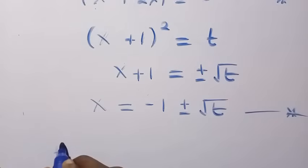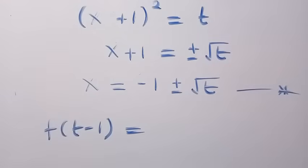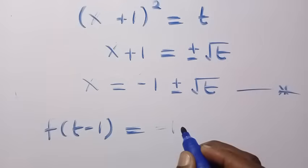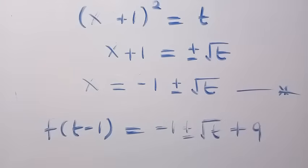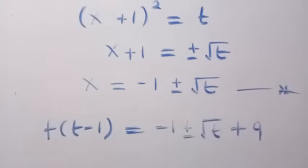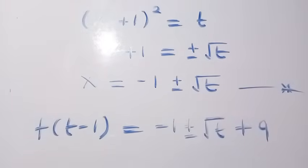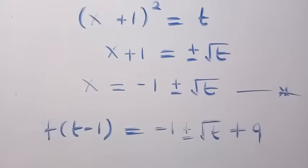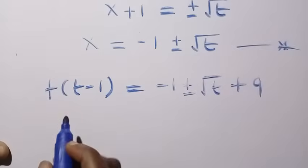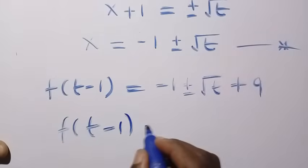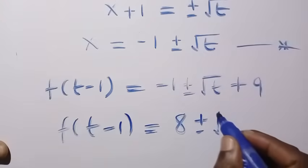After substituting, we have f of t minus 1 equals x plus 9, where x is minus 1 plus or minus the square root of t, giving us minus 1 plus or minus square root of t plus 9. Combining the constants, f of t minus 1 equals 8 plus or minus the square root of t.